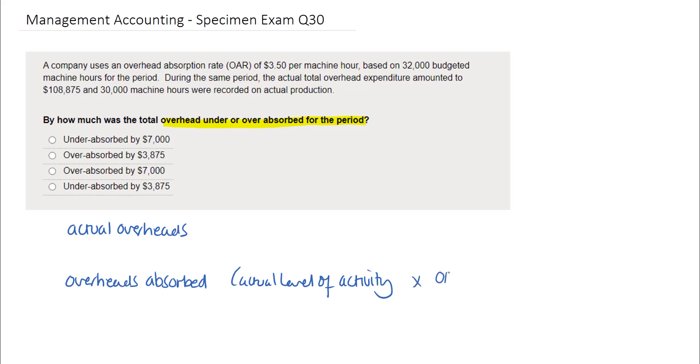Let's look at the information that's provided in this question. We can see that the very first sentence reveals the overhead absorption rate of £3.50 per machine hour. So let's lock that into our equation.